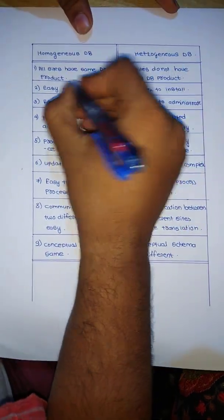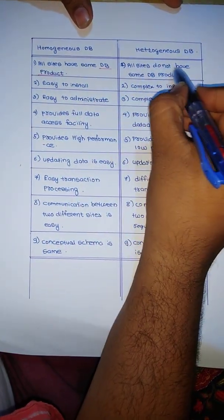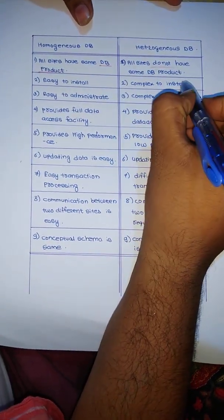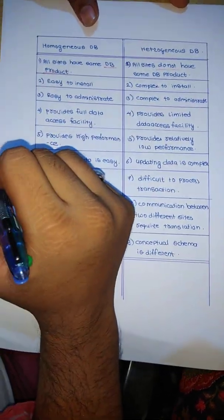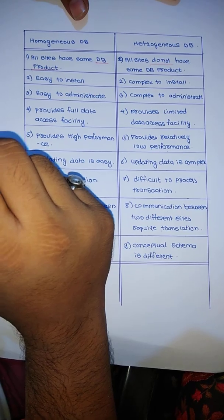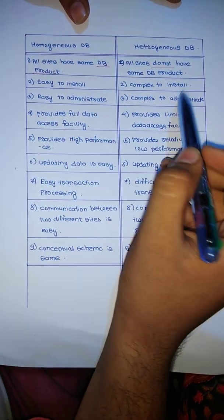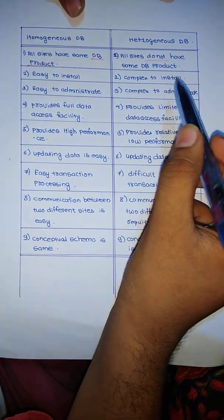The important keyword is database product — all sites have the same database product in homogeneous, while all sites do not have the same database product in heterogeneous. Installation is easy using a homogeneous database because there is only one software to install on all the computers, but in a heterogeneous database, installation is complex. So the keyword here is installation — that is I.